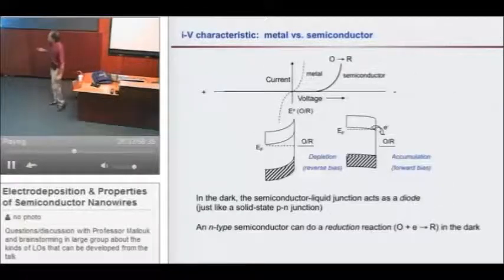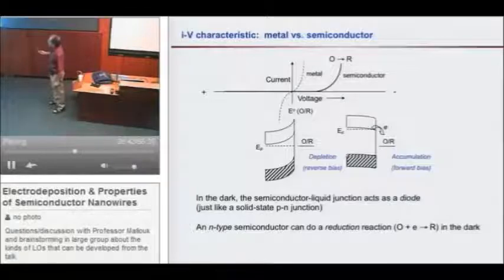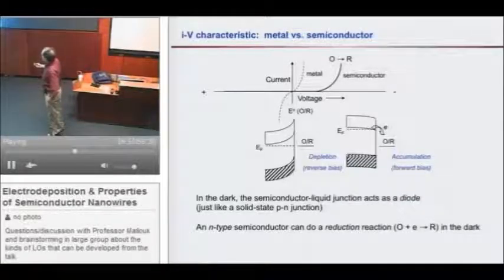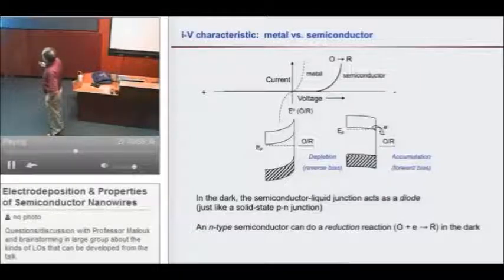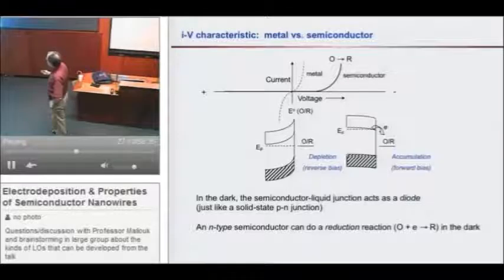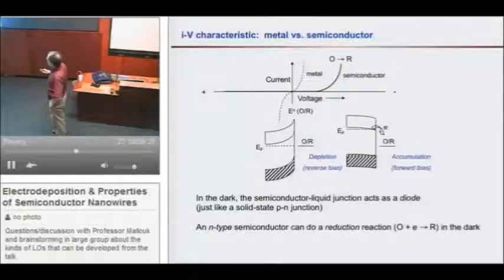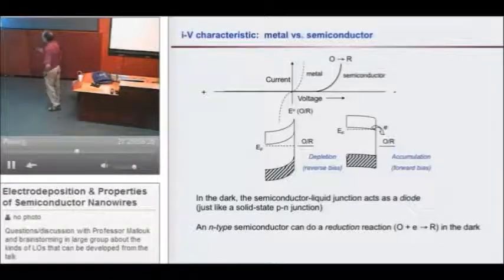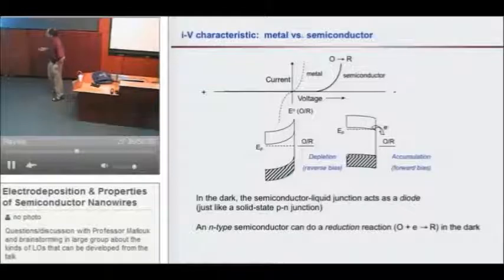The way electrical engineers draw diodes, they draw them with the P side on the back end of the arrow and the N side on the front end. An n-type semiconductor can do a reduction if we apply a negative potential to this in the dark, but it can't do an oxidation. Another way to think of this: the convention for electrical engineers is the current is the direction of positive charge flow. Positive current can go that way. That means negative current can go that way in the diode. So if we make this a p-type semiconductor, we flip this diode around. We can do an oxidation in the dark with a p-type semiconductor.